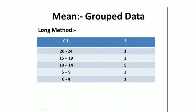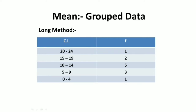Suppose the following data is given to us where class intervals are: 20 to 24, 15 to 19, 10 to 14, 5 to 9, and 0 to 4, and the frequencies are also given to us: 1, 2, 5, 3, and 1. So there are five class intervals and their frequencies are given here.